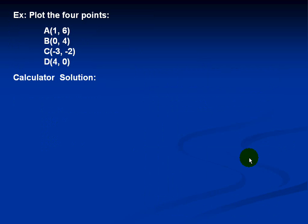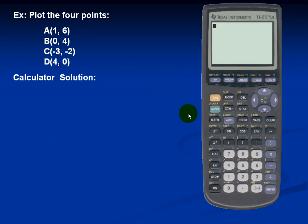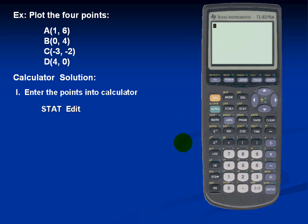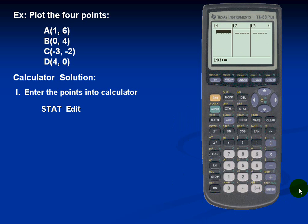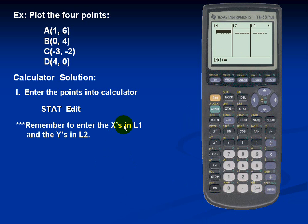Let's take a look at the calculator solution. We will enter the points into the calculator. In doing so, we must press STAT and choose Edit, so we'll simply press Enter. Remember that we are to enter the X values in List 1 and the Y values in List 2.